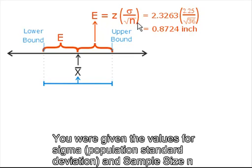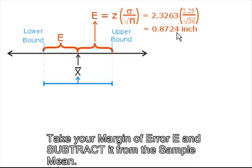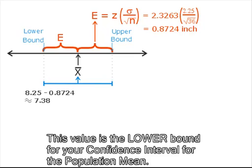Take your margin of error E and subtract it from the sample mean. This value is the lower bound for your confidence interval for the population mean.